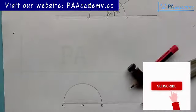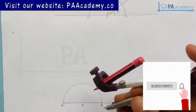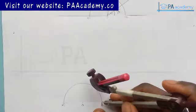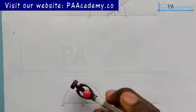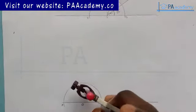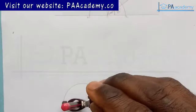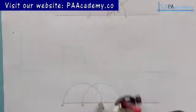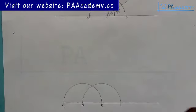Now with the same length of compass, I'll come to point B, as the semicircle is touching our line. I'll draw another semicircle. Let me call this point, point C.